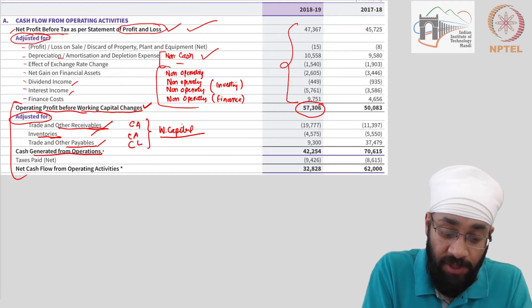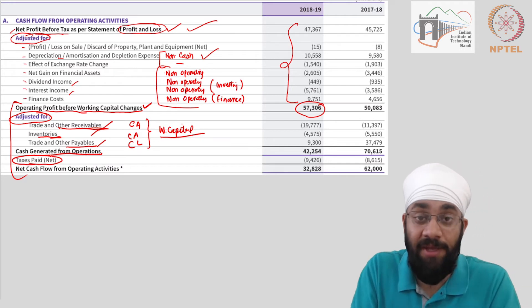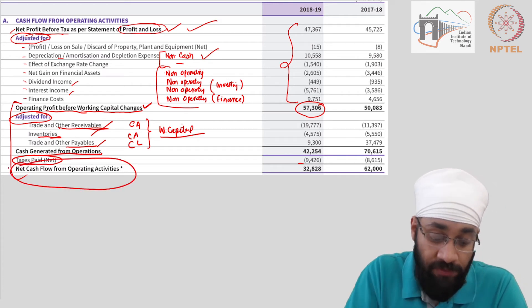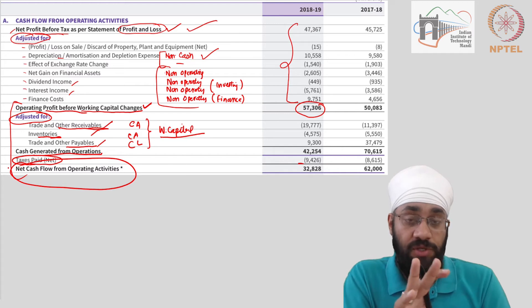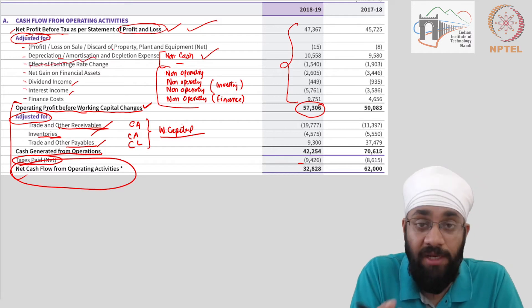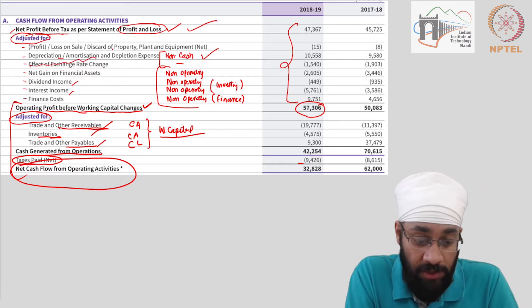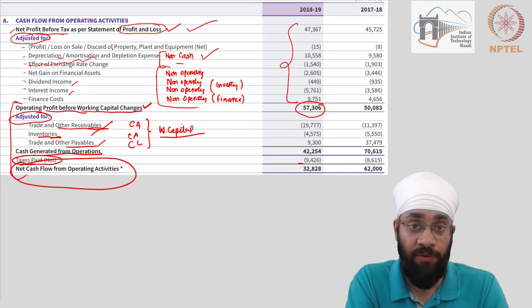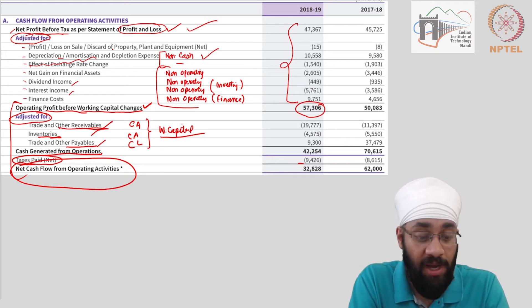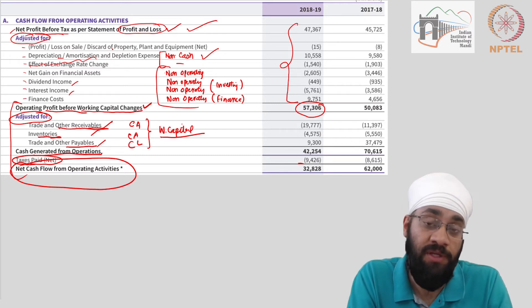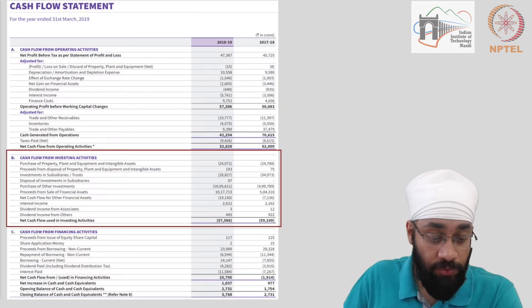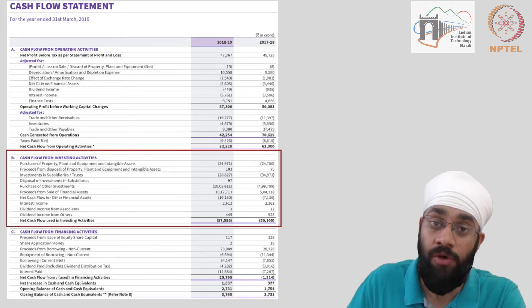Then you have the cash generated from operations, and then taxes are paid on it — taxes are shown separately here. Finally you arrive at a number called net cash flow from operating activities. We are familiar with all the items shown here. What we need to understand in this section is why these adjustments are being made and what the outcome is — we will deep dive into those in the following videos. Let's move to the second section, which is about the investing activities of the business.